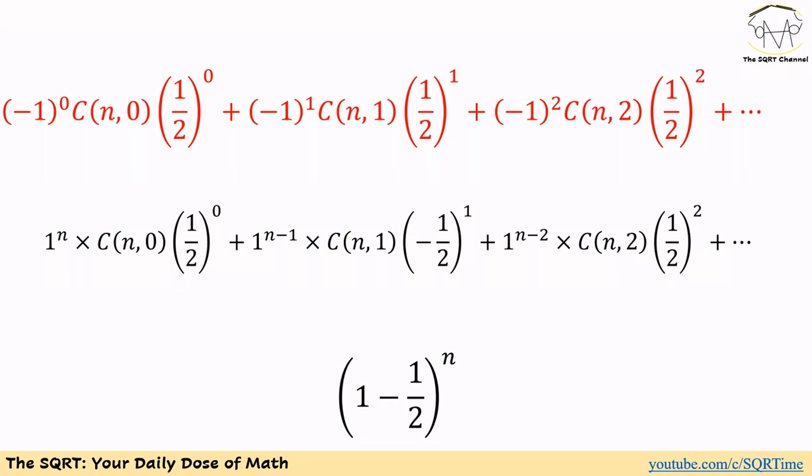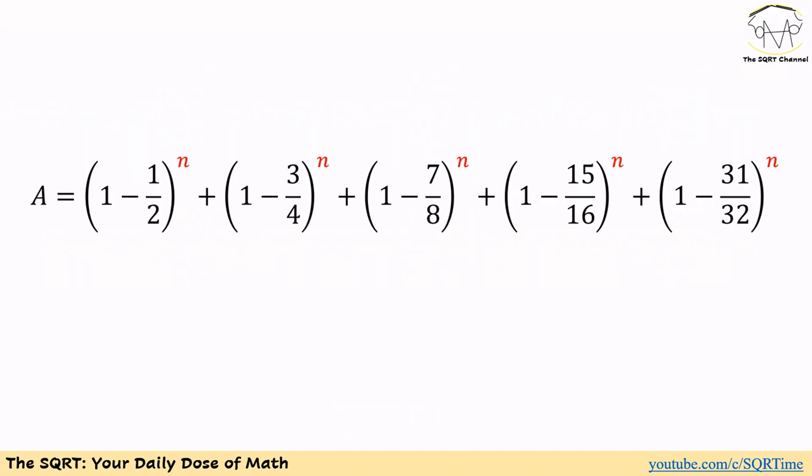We rewrite 1 as 1 to the power of n, and applying the binomial theorem we can factor from the sum. The whole expression can then be written as: 1 minus (1/2)^(n+1), plus 1 minus (3/4)^(n+1), plus 1 minus (7/8)^(n+1), plus 1 minus (15/16)^(n+1), plus 1 minus (31/32)^(n+1).